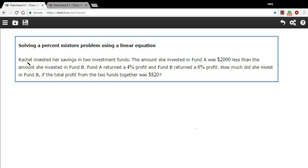Let's start by reading this problem. It says Rachel invested her savings in two investment funds. The amount she invested in Fund A was $2,000 less than the amount she invested in Fund B. Fund A returned a 4% profit. Fund B returned a 6% profit. How much did she invest in Fund B if the total profit of the two funds together was $820? Alright, that's a lot of facts thrown at us all at once. Let's take this step by step and sort it out.